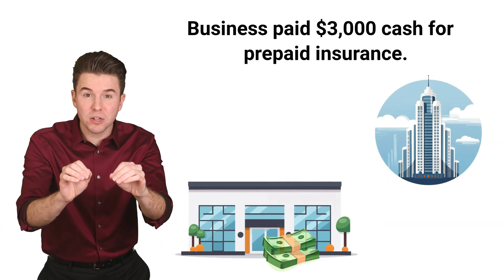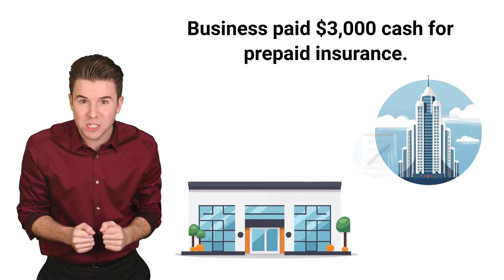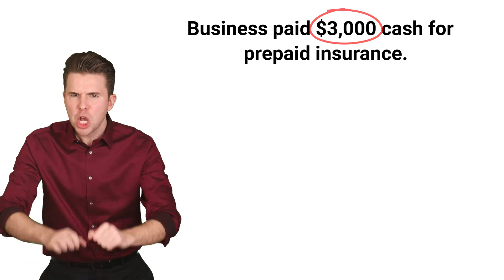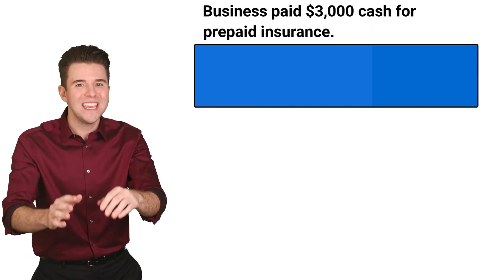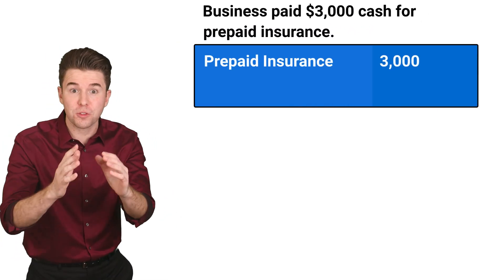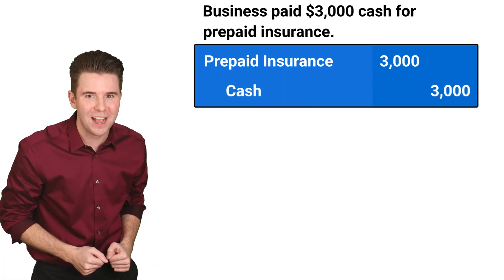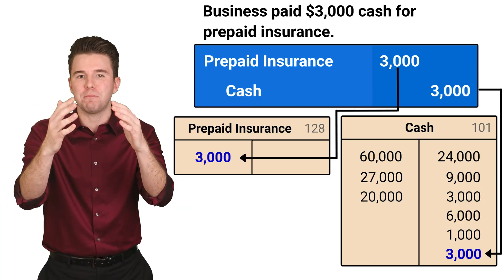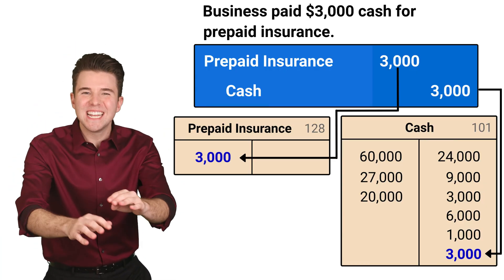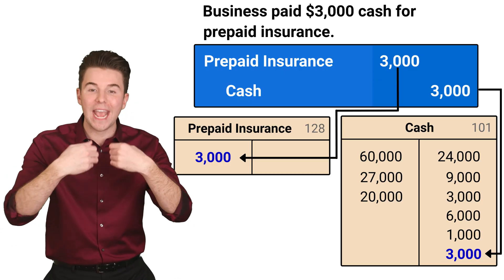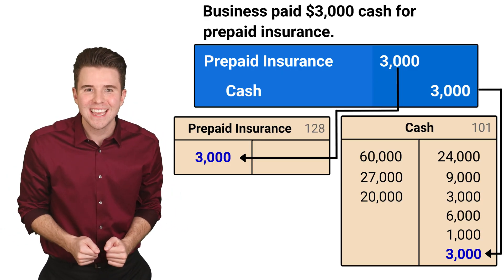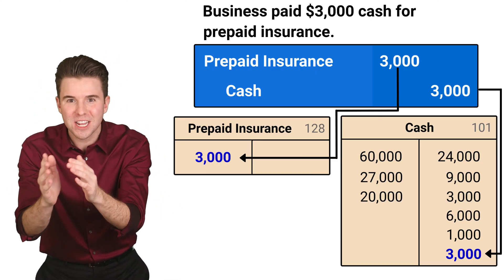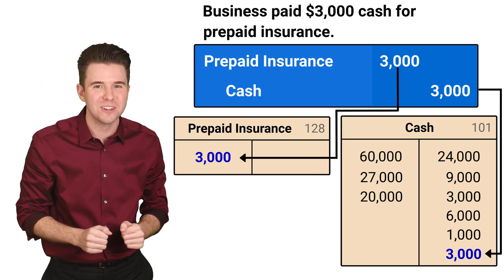Next, the company purchases a six-month insurance policy by prepaying $3,000 cash. To record this transaction, we debit prepaid insurance for $3,000 and credit cash for $3,000. We debit prepaid insurance to increase that prepaid asset. This payment does not create an expense, even though cash flows out of the business. Instead, insurance expense will be recorded as the insurance coverage expires over time.